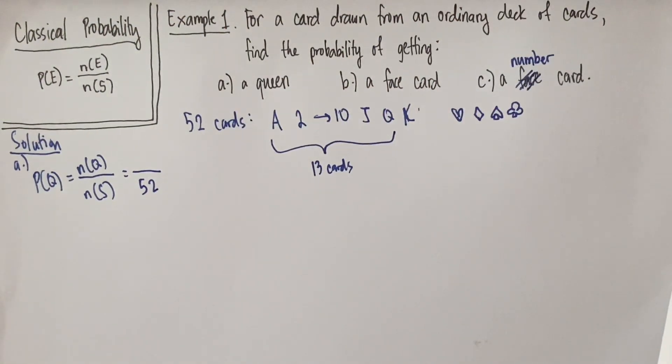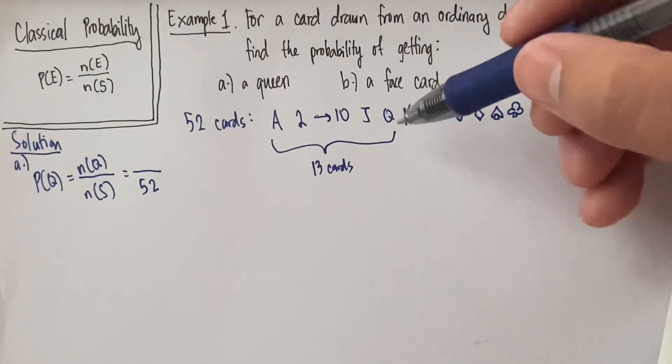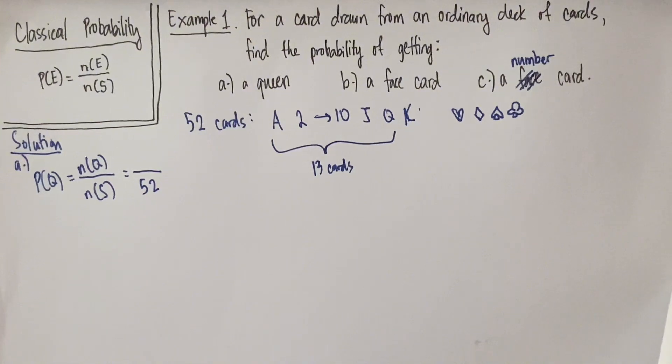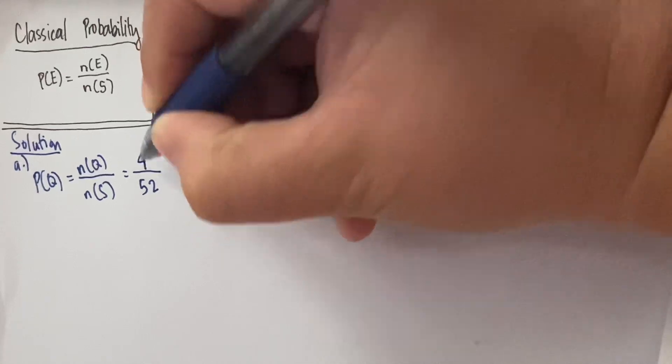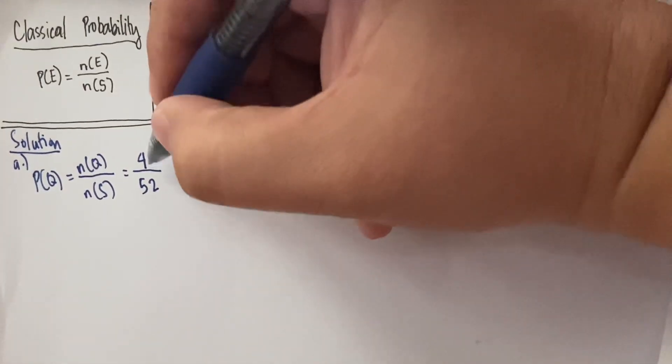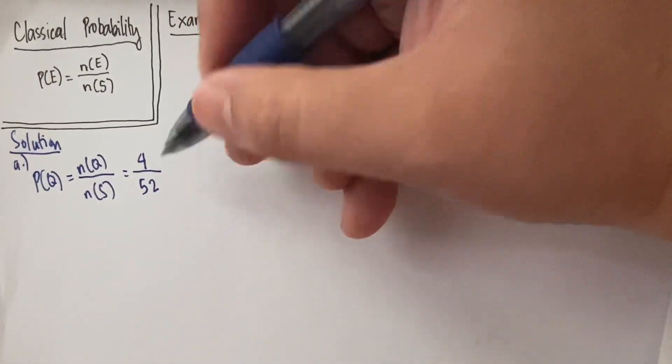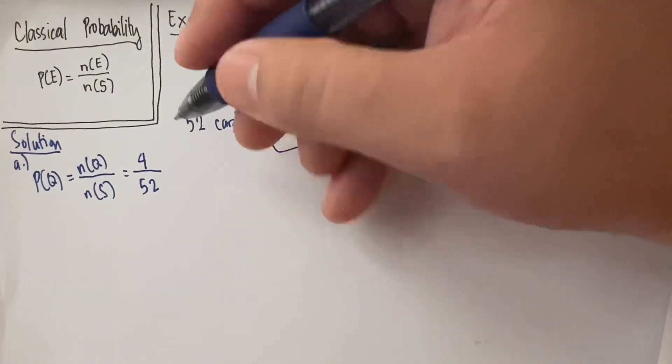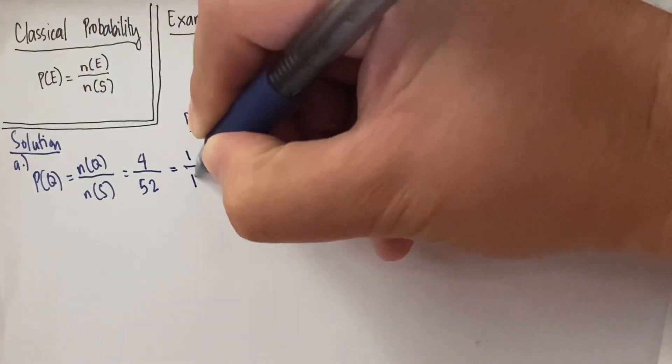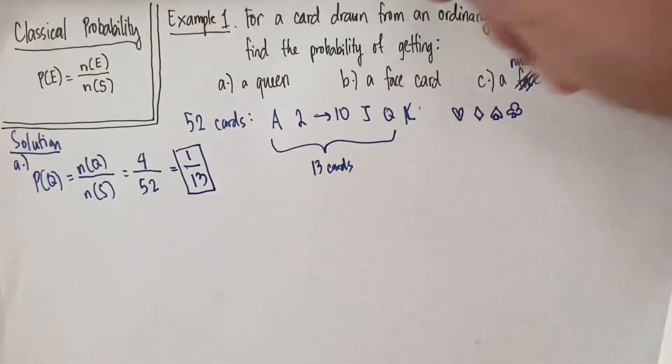And how many queens do we have in total? So we have queen of hearts, queen of diamonds, queen of clubs, and of course, our queen of spades. So there are 4 in total. So what we have is 4 over 52. And of course, we can always simplify as a usual thing that we do in mathematics. We're going to find their least common divisor, and we know that it's 4. So we're going to divide this by 4. The most simplified form is 1 over 13. And this is our answer for number 1 or for letter A.